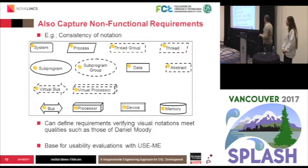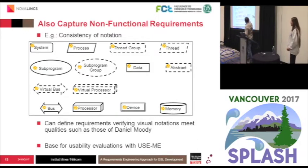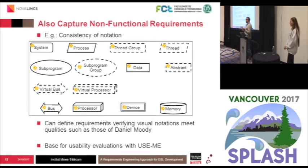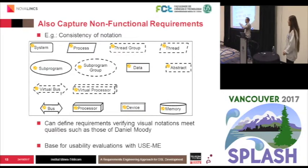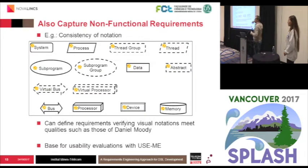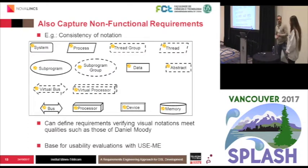The last and most interesting part is capturing non-functional requirements. Very often you can see that some notations may have inconsistencies. For example, in the AADL notation, if you look carefully, you see that virtual bus, virtual processor, and abstract are dashed — suggesting dashes mean abstract or virtual. But then you have a thread that is dashed, and thread group and subprogram group are dashed, while subprogram is not — so there are many inconsistencies. You could capture non-functional requirements, attach them to your graphical syntax, and verify you meet best practices — for example, those of Daniel Moody. This forms the base of usability evaluation that Ankitsa will now talk about.